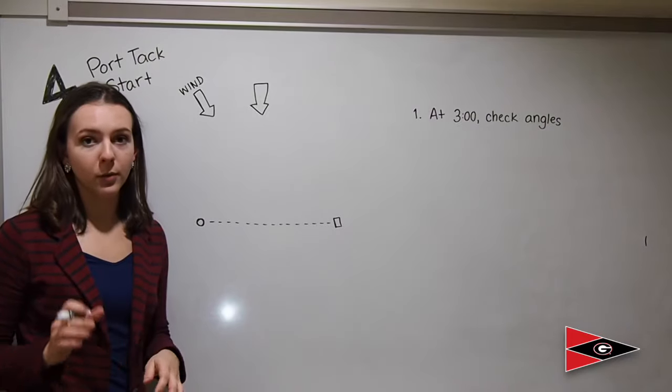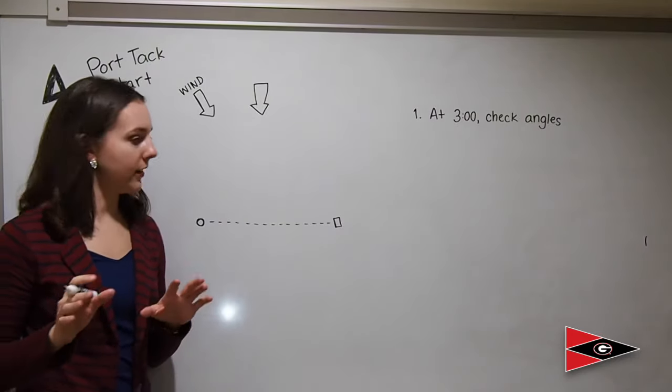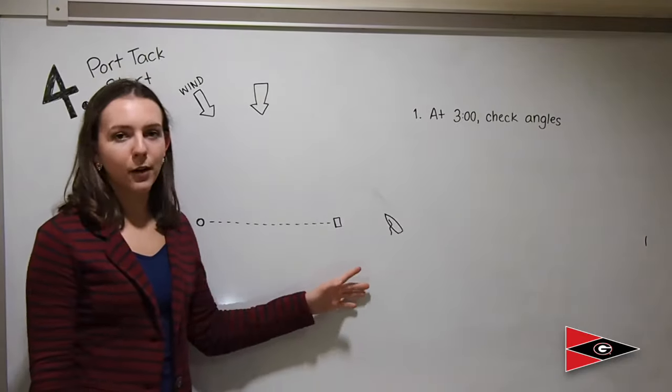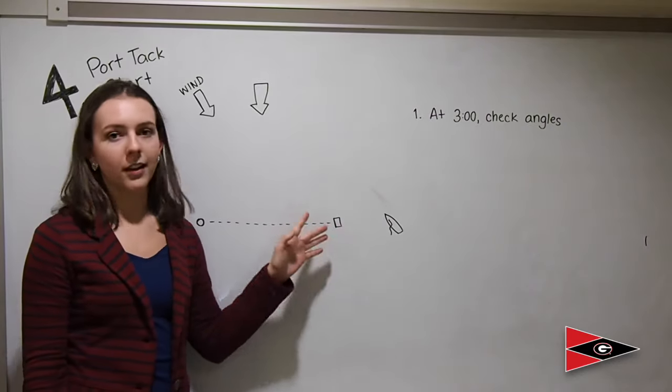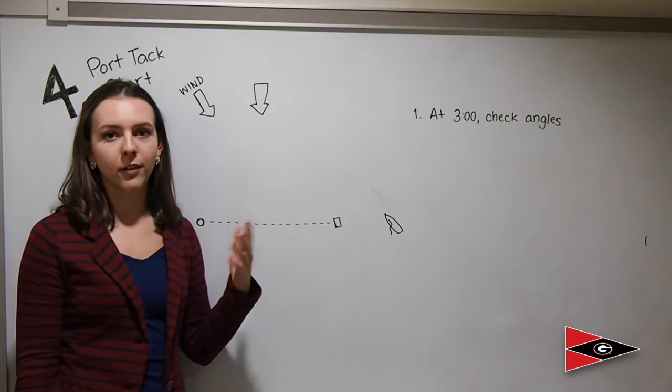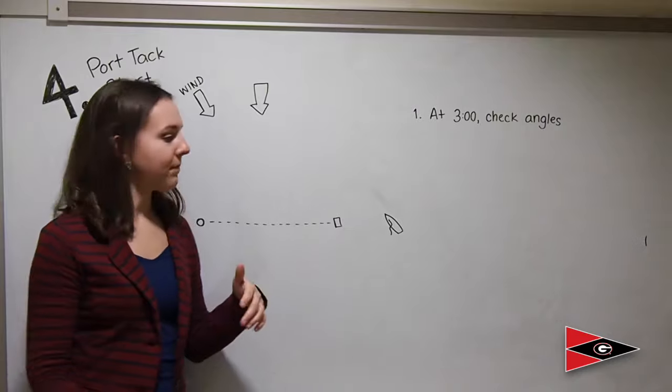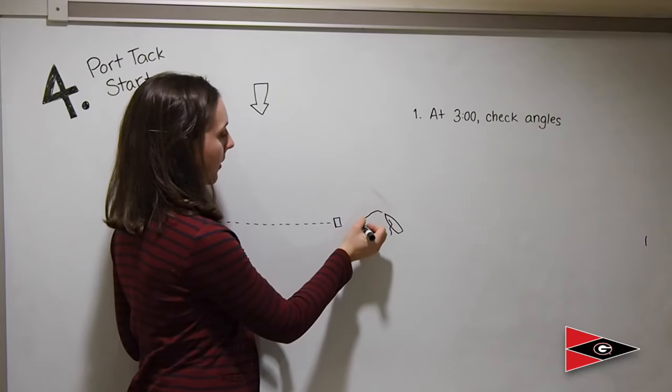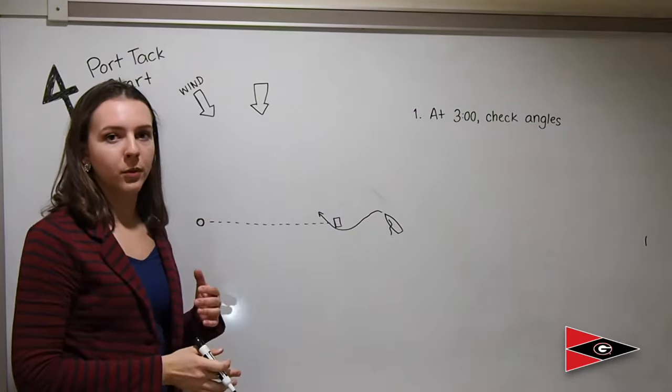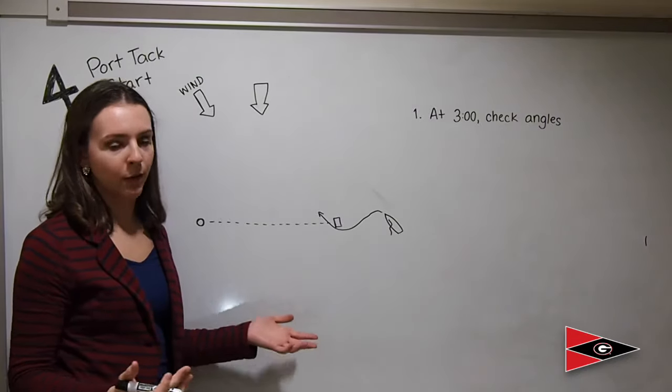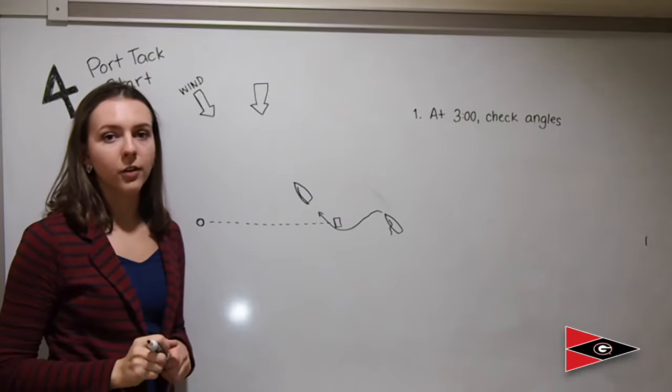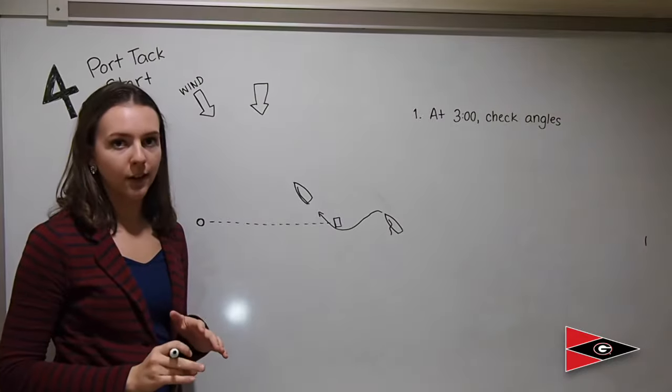As soon as the race committee blows the whistle for three minutes I am immediately checking my angles. I'll be close to the committee boat off to the side so I can hear them communicating on when they're going to start the starting sequence. As soon as they do, I peel off down here and I round the race committee boat as if it were a leeward mark but from the other direction. I go off on a close haul tack and see how close I can get to the wind.